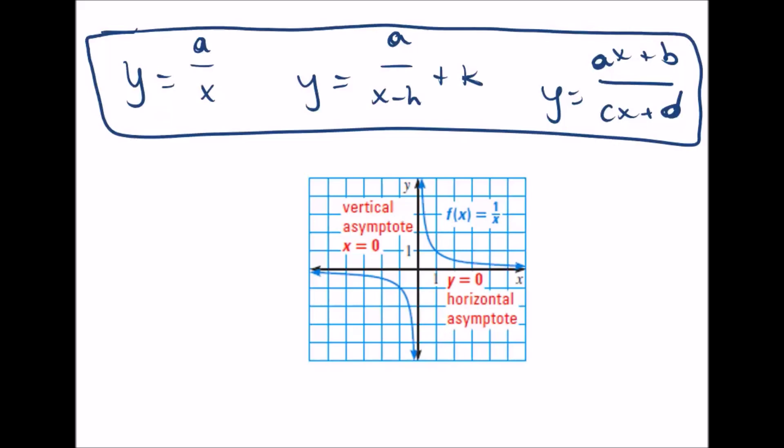The second one is when it's transformed with a, h, and k. And the last one is a third type.